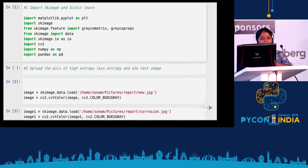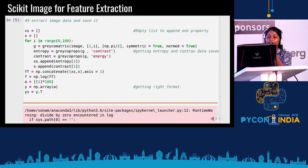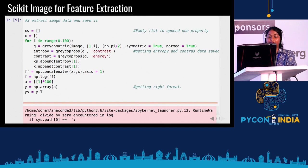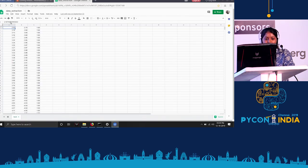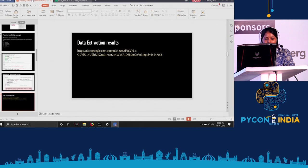Here is the code using skimage.feature — specifically graycomatrix and graycoprops. We import the image we want to extract data from, provide the spatial relationship and the angle. We then get entropy and contrast data directly from the graycoprops library and save it. The data looks like: contrast and entropy values where ones represent corroded data and zeros represent uncorroded data. This is how we build our own dataset.